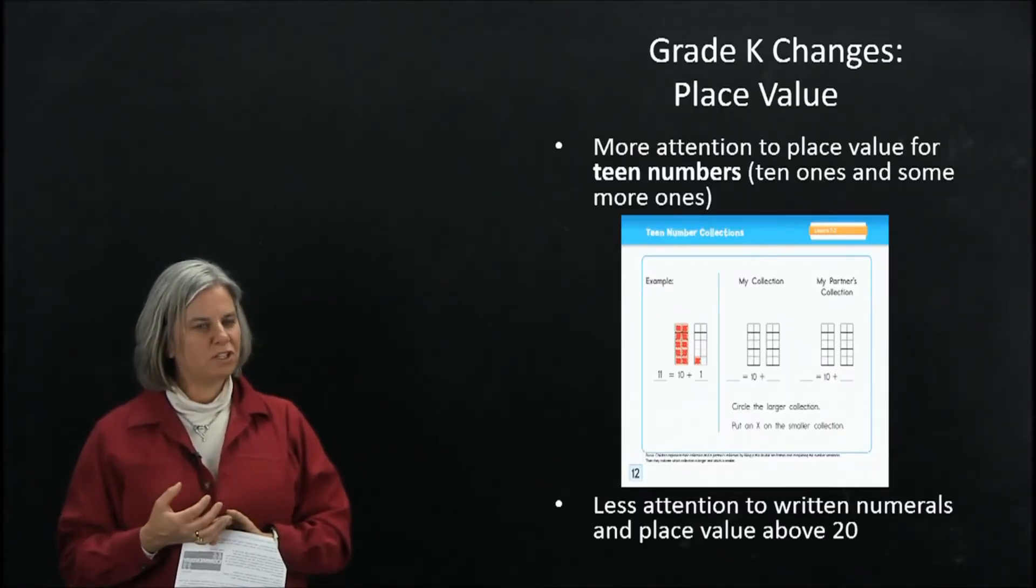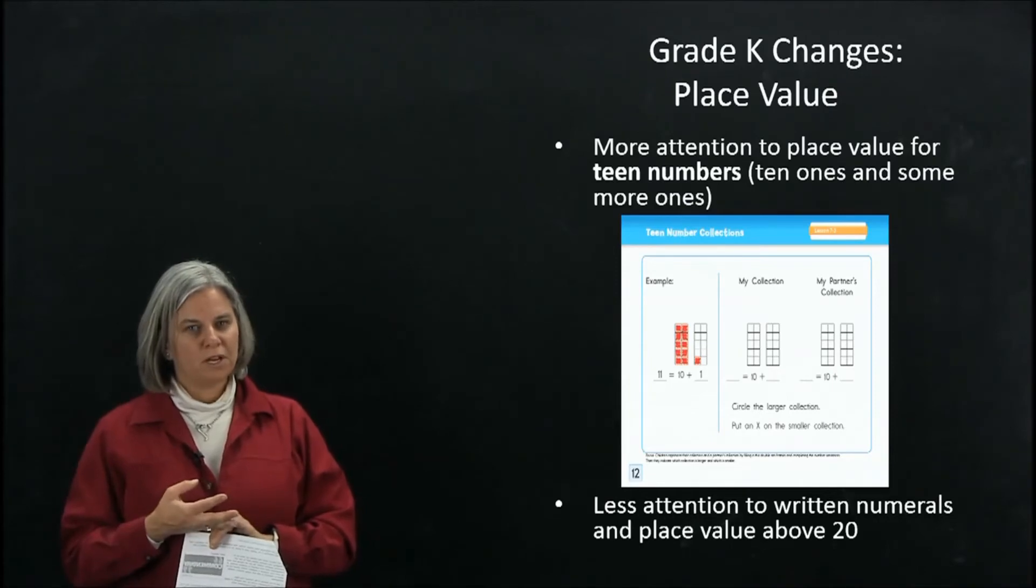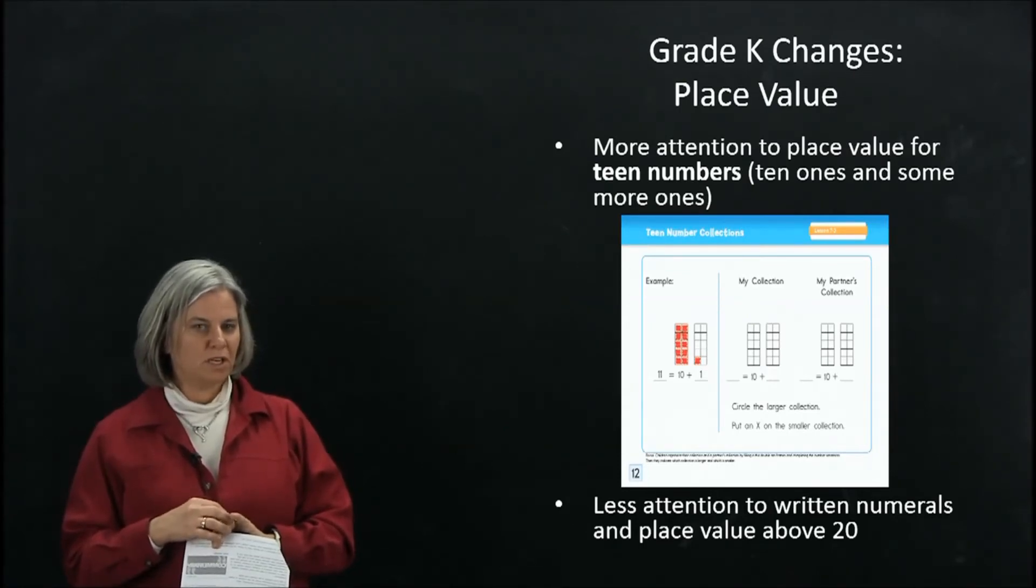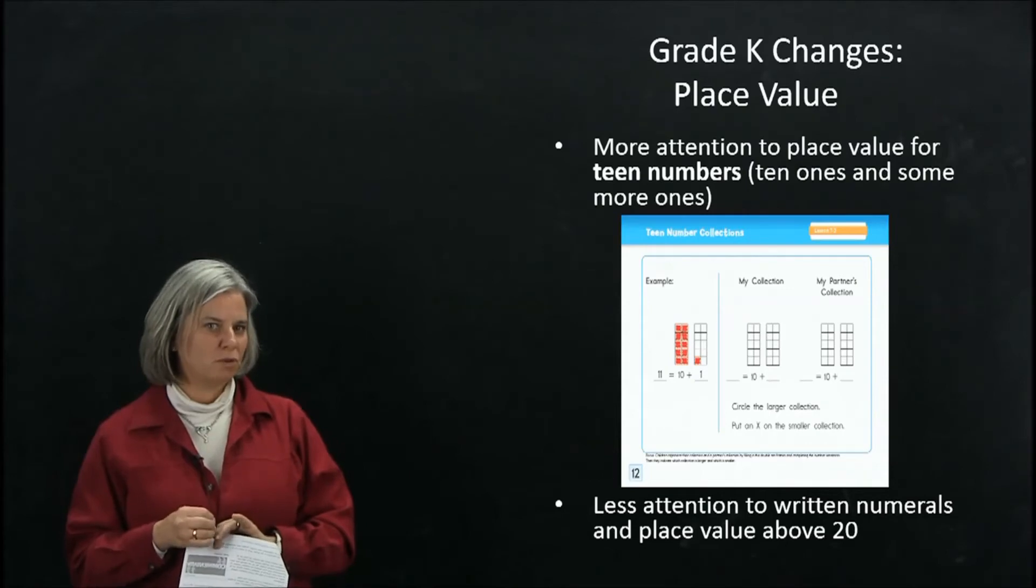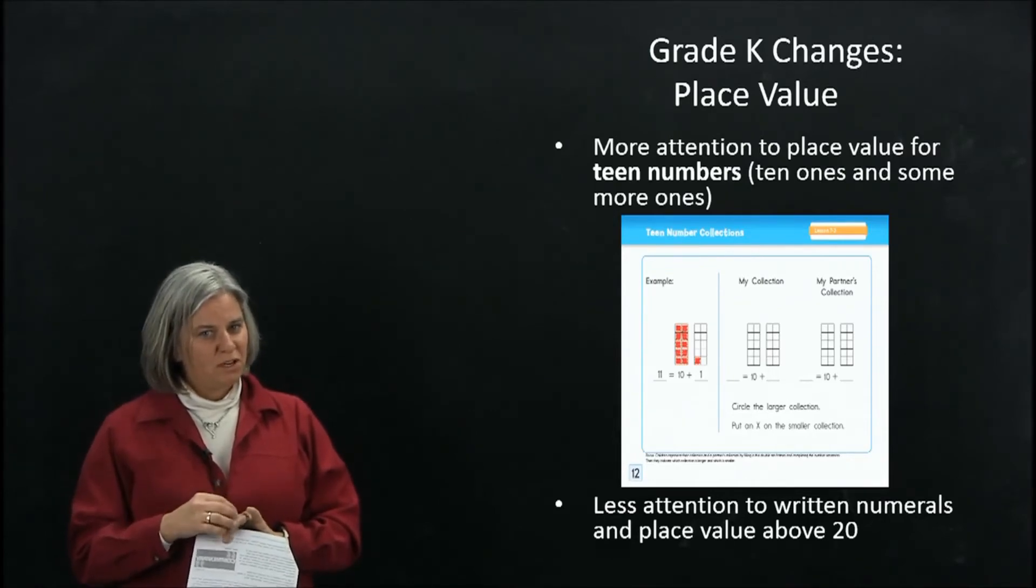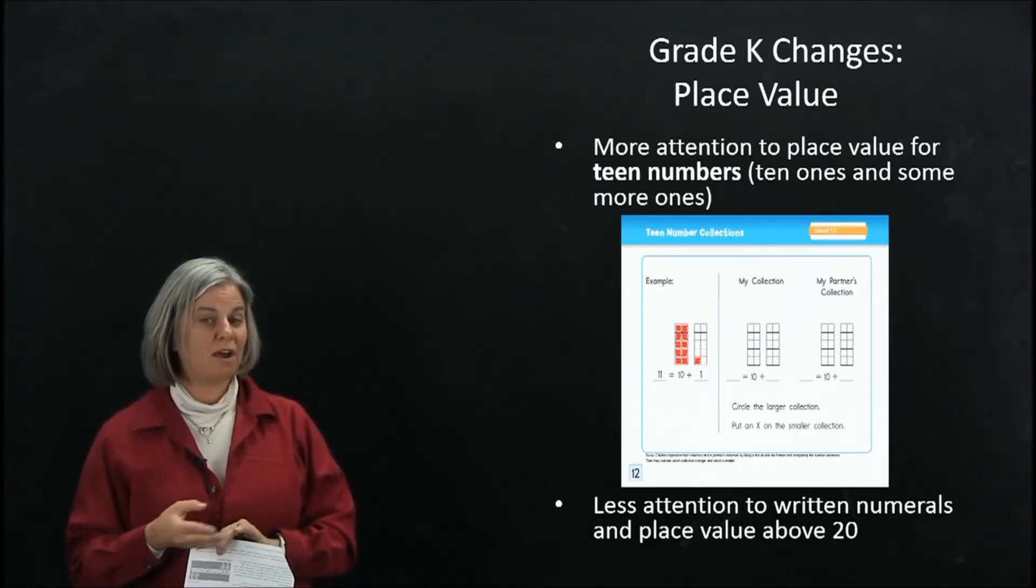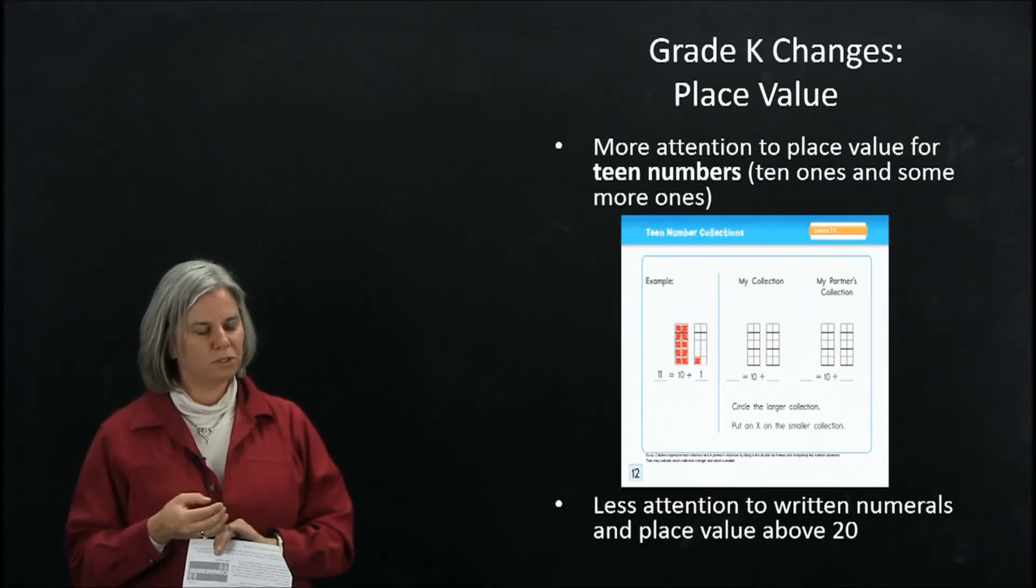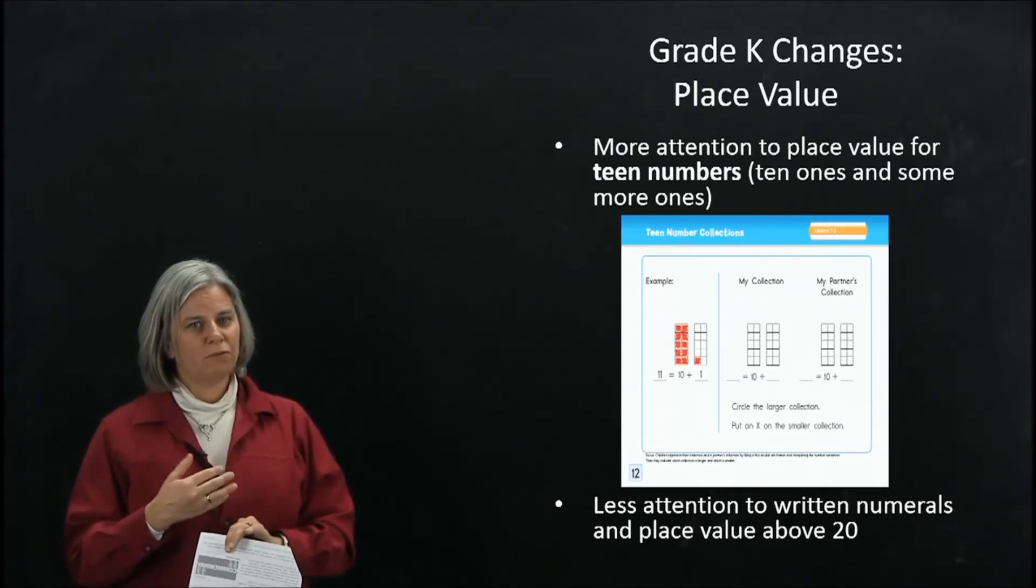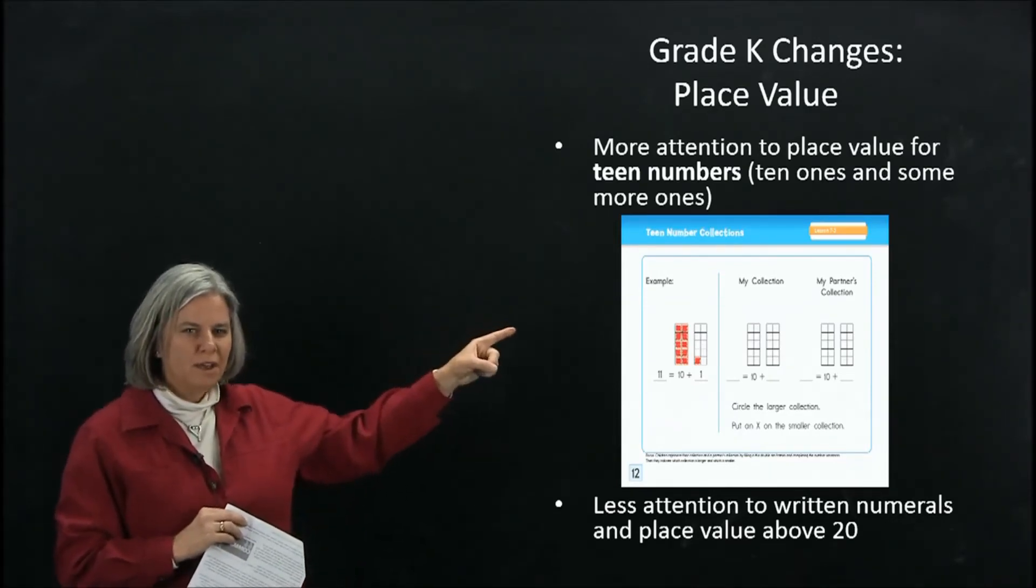Another thing people might notice is that we've changed our attention to place value. In older versions of Everyday Math we really did focus on written numerals up to and beyond 100. Here we've shifted the emphasis. We give considerably more attention to place value for teen numbers, and even at that, it's 10 ones and some more ones, in correspondence with the Common Core KNBT1. We've given relatively less attention to written numerals and place value above 20, but I wouldn't say we've removed it entirely because the Common Core still has kids counting to 100. We do use some written supports like a number grid to support that oral counting, but it really is more backgrounded. In the foreground, when we're talking about written numbers, it really is 0 to 20.